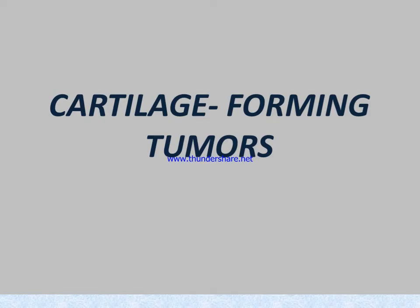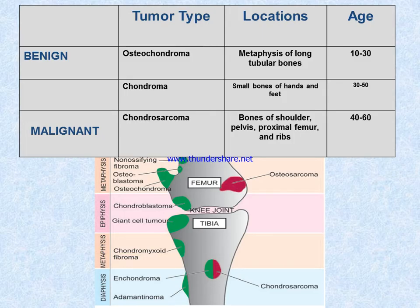Now we look at cartilage-forming tumors. These are again divided into two categories: benign and malignant. In the case of benign tumors, osteochondroma is located in long tubular bones, age ratio 10 to 30. In the case of chondroma, it is found in small bones of the hand and feet.